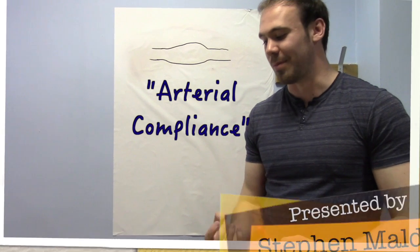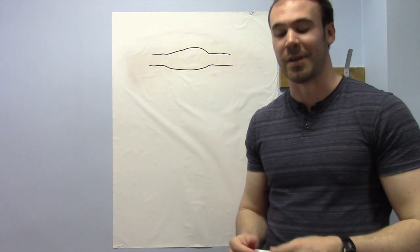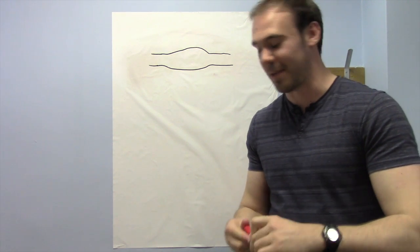So as we age, our arteries steadily lose what's called their compliance, or basically their stiffness or elasticity, and this affects how effective they are at letting the heart pump blood around the body. I'll explain that now in a bit more detail.